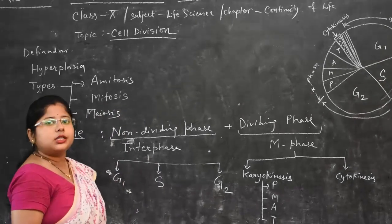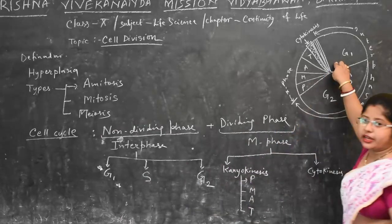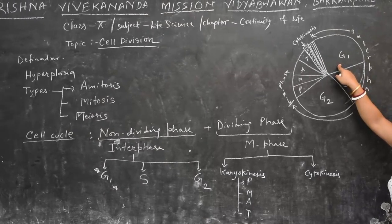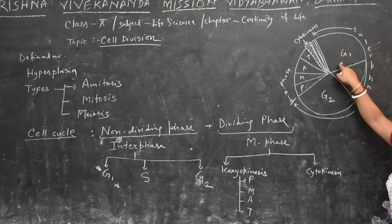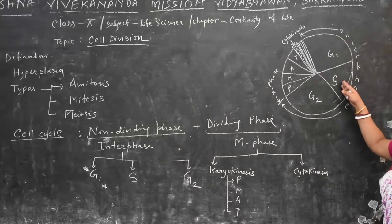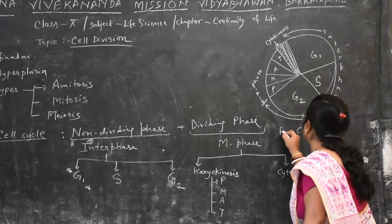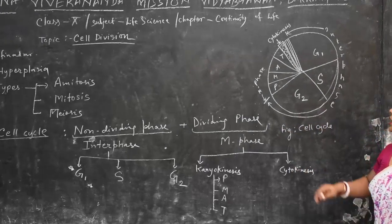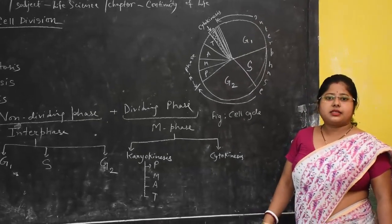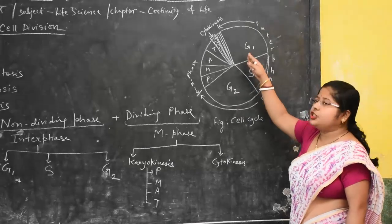When the cell enters into G1 phase, it will grow its size and synthesize the different types of proteins and enzymes that are required for carrying out the Synthetic phase of the cell cycle. All the proteins and necessary enzymes required to carry out the Synthetic phase are synthesized in G1 phase.